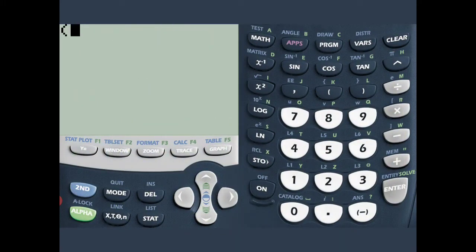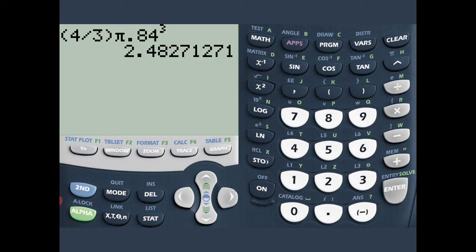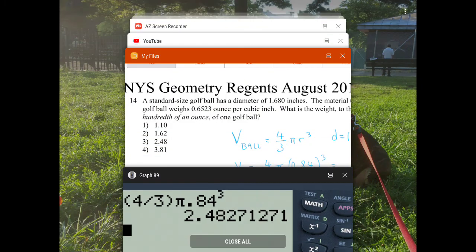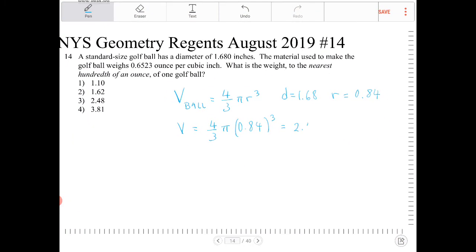So I'm going to enter in four-thirds times pi times 0.84 to the third. And that will give me 2.4827. So this is 2.4827 cubic inches. I'm not going to round until the very end.